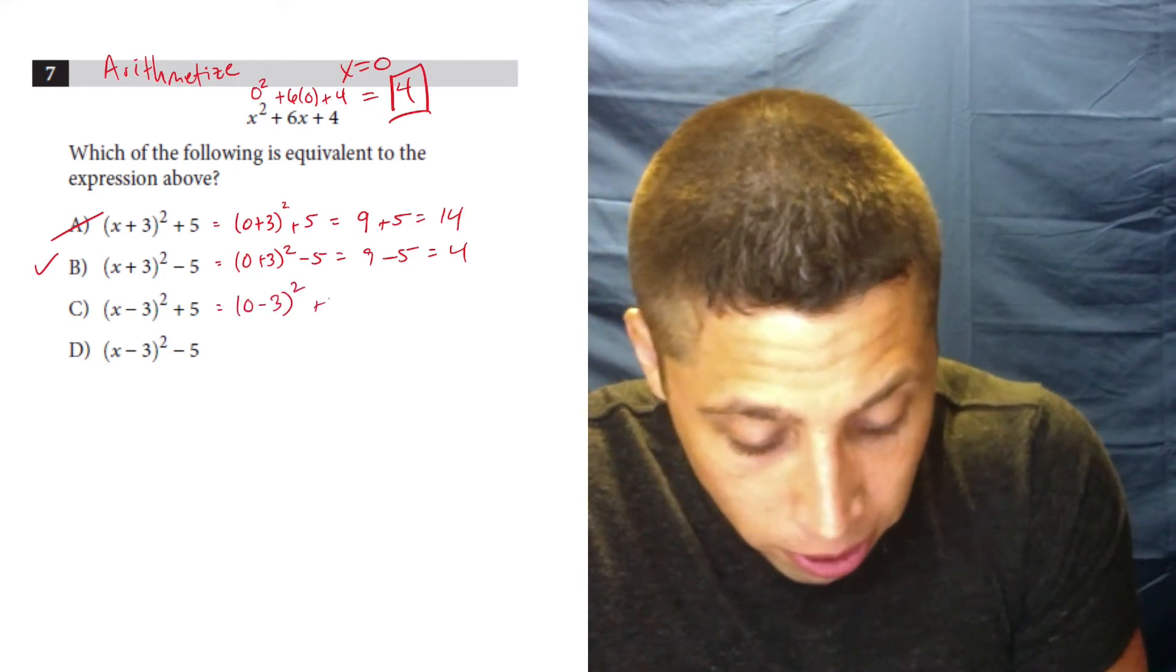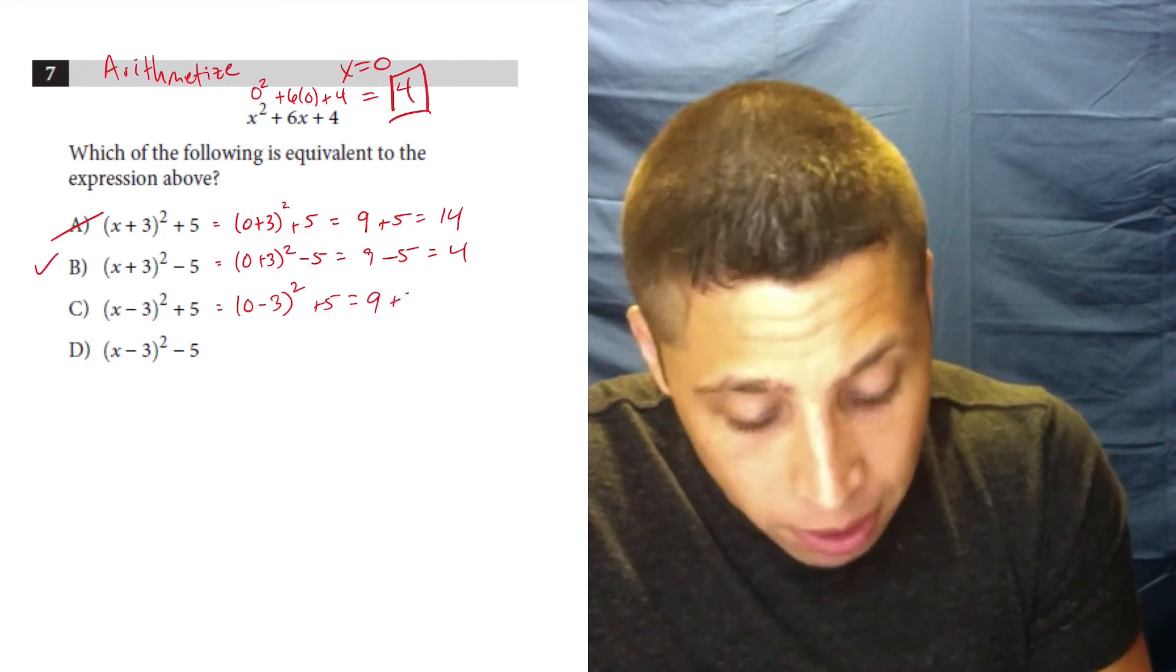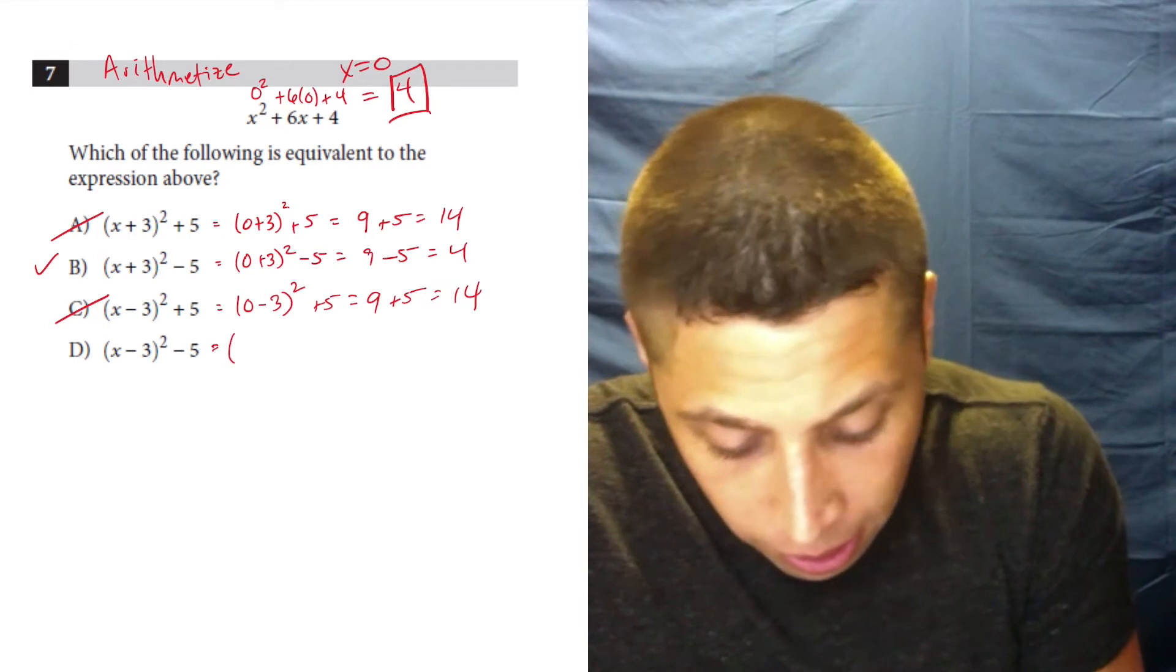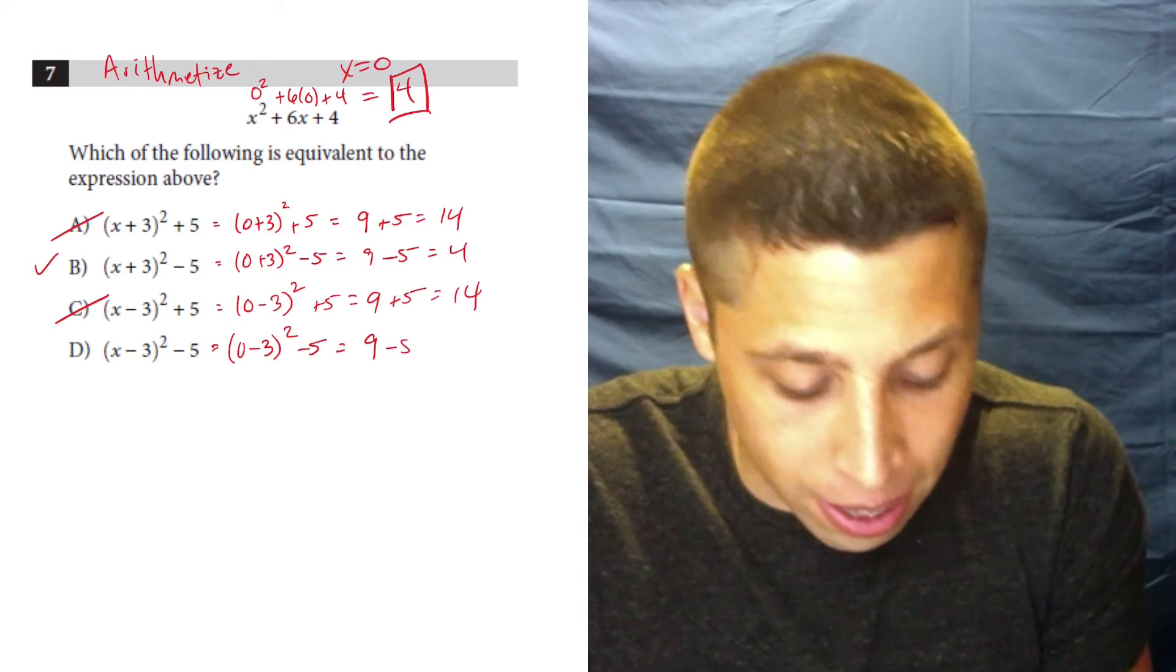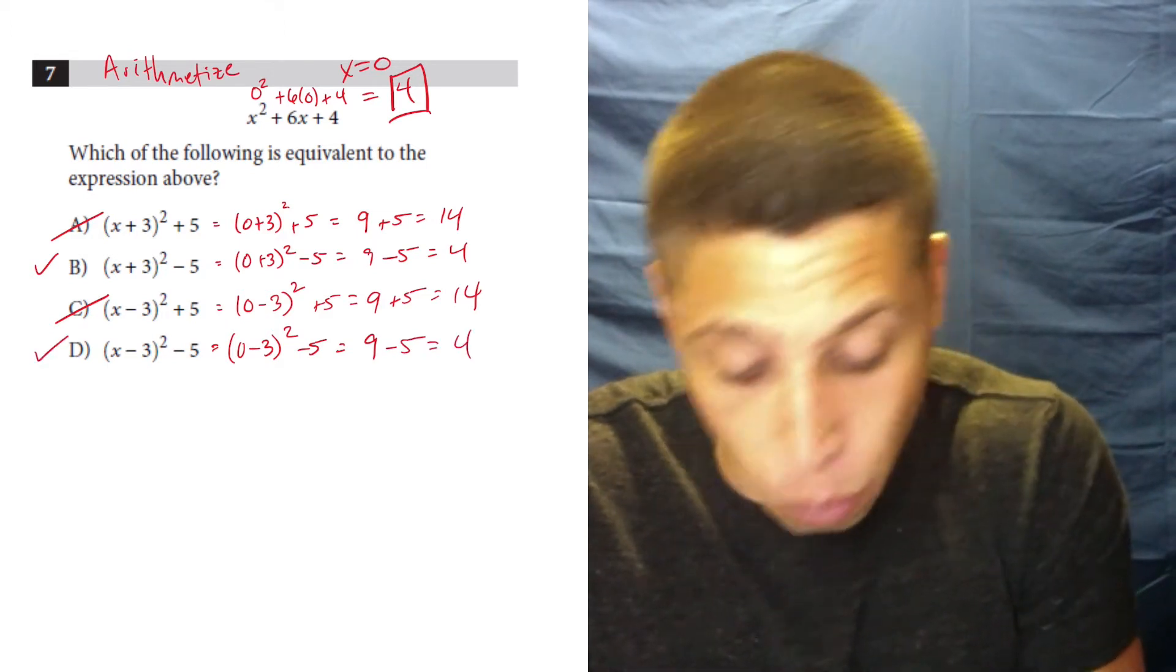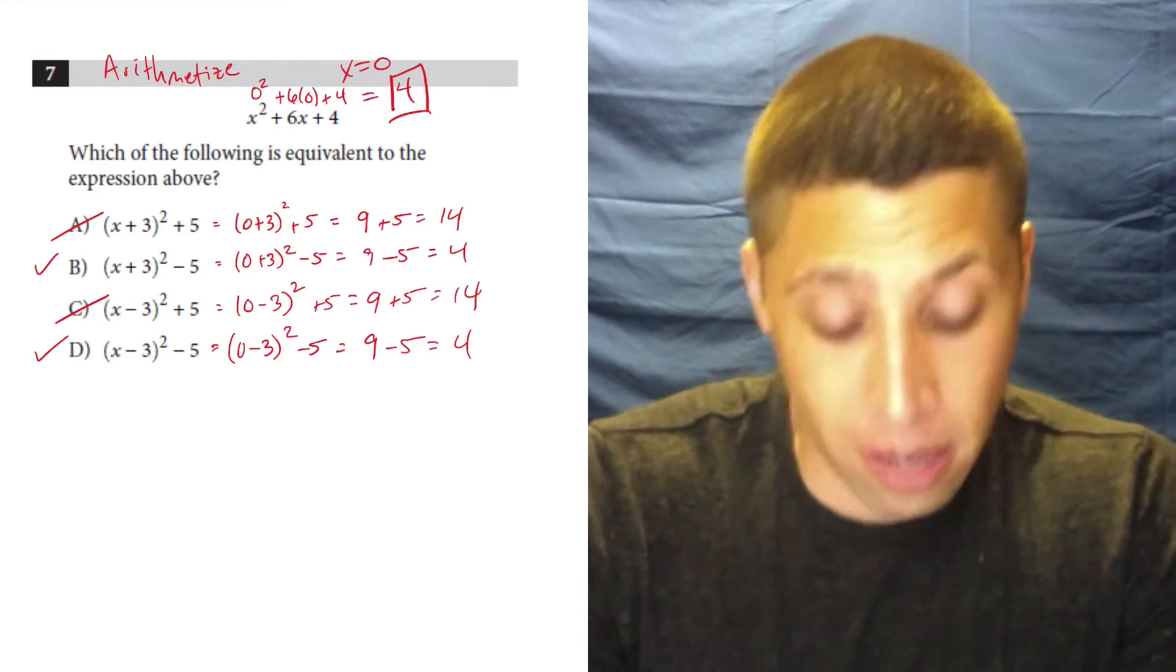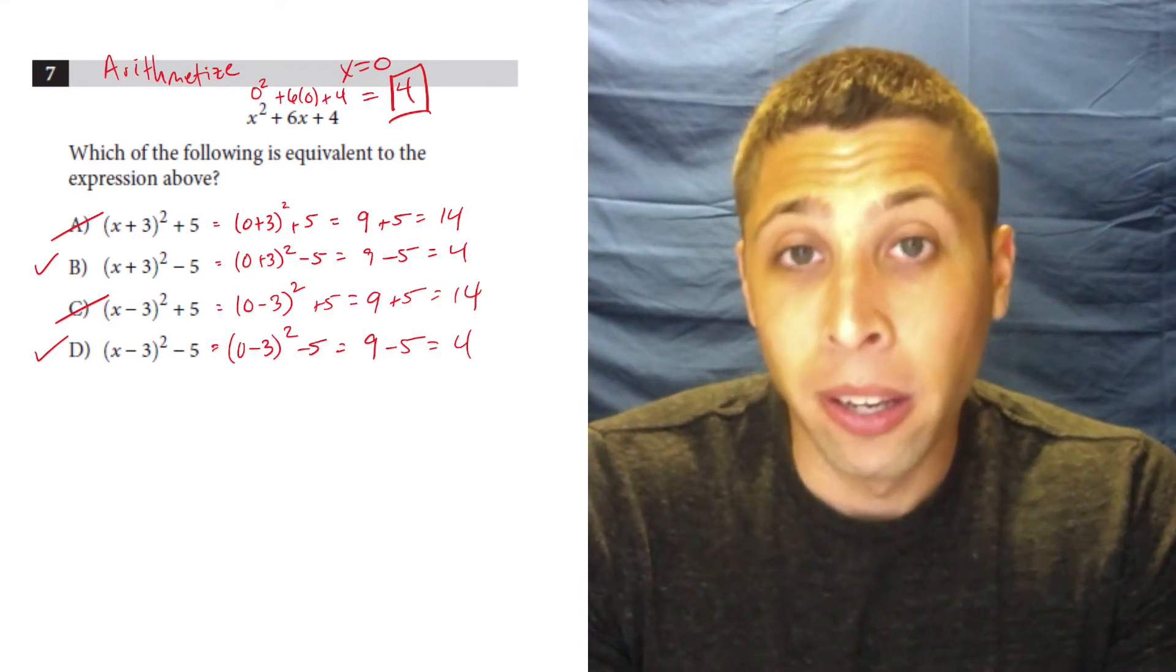Zero minus three squared plus five. Negative three squared is also nine. Plus five is 14. So that's gone. And zero minus three squared minus five. Nine minus five is four. So it happened. I'm not surprised it happened.